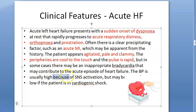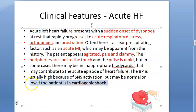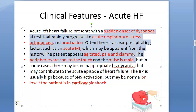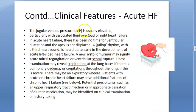The blood pressure is usually high because of SNS — sympathetic nervous system — activation, but may be normal or low if the patient is in cardiogenic shock. So everything here is uncertain: it can be bradycardia or tachycardia, low BP or high BP. But what they are very sure about is respiratory distress, sudden dyspnea, and peripheries that are cold and clammy — always remember that phrase.